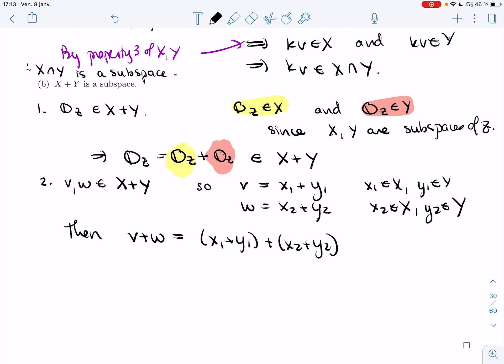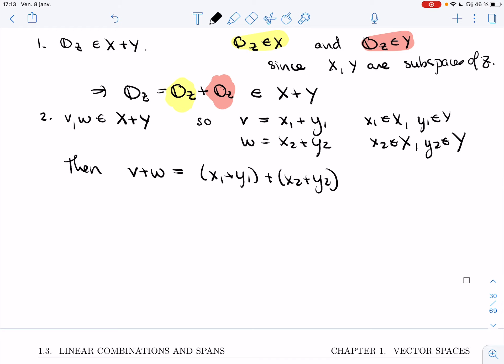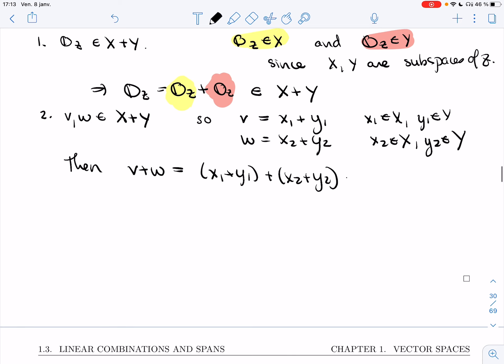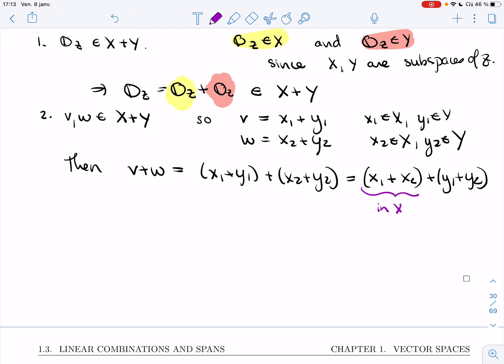Then v plus w is x1 plus y1 plus x2 plus y2. Now if I really ask you to be precise and careful, you'd have to change the parentheses and then use commutativity and stuff. But let's do it quickly. If I rearrange the terms, I'll get x1 plus x2, y1 plus y2. This is in X because of property 2. This one is in Y because of property 2 for Y. And so this equal to some x plus some y is in X plus Y.